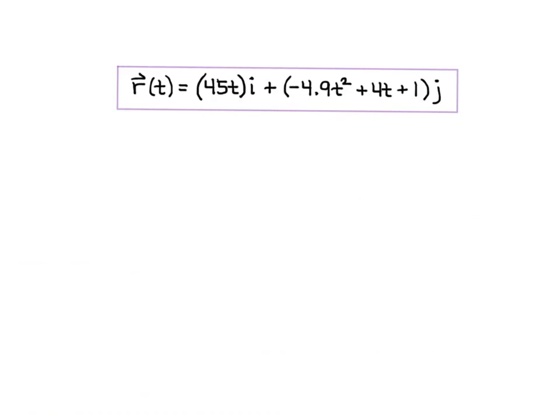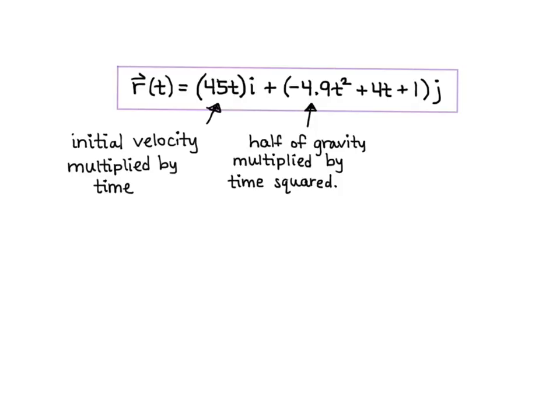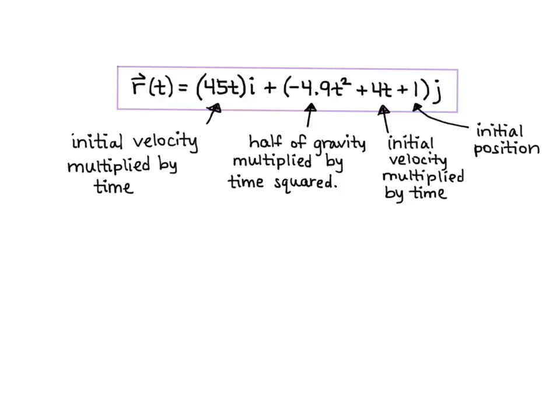Looking at our position vector r(t), the i component 45t is the initial x-velocity multiplied by time. In the j component, the t² term is one-half of gravity times time squared; the 4t term is the initial y-velocity times time; and the +1 is the initial position. This pattern always holds when only gravity acts: j component = (½g)t² + v₀y·t + y₀.